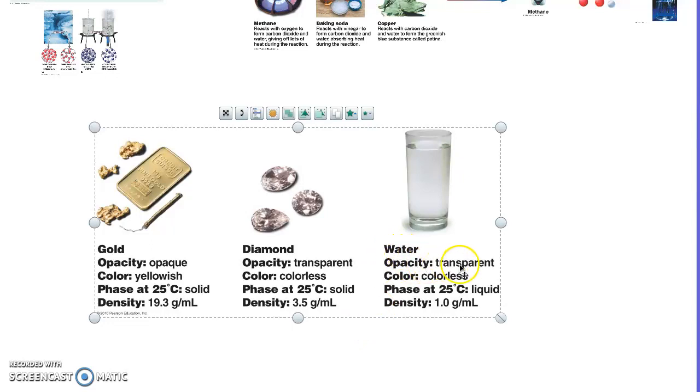And the last, water, is transparent, it's also colorless, but it is a liquid at room temperature, and its density is 1.0 grams per milliliter. So you can see how these have things in common but they're different based on their physical properties. Anytime we're looking at things and trying to classify them, it's usually done on their physical properties, what we can actually see and observe directly like that.